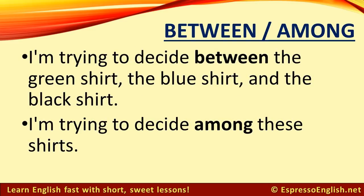Here's another example. I'm trying to decide between the green shirt, the blue shirt, and the black shirt. Again, we can use between with two, three, four, or more individual items, as long as we name them specifically. But if we refer to them as a group, then we should use among. I'm trying to decide among these shirts.